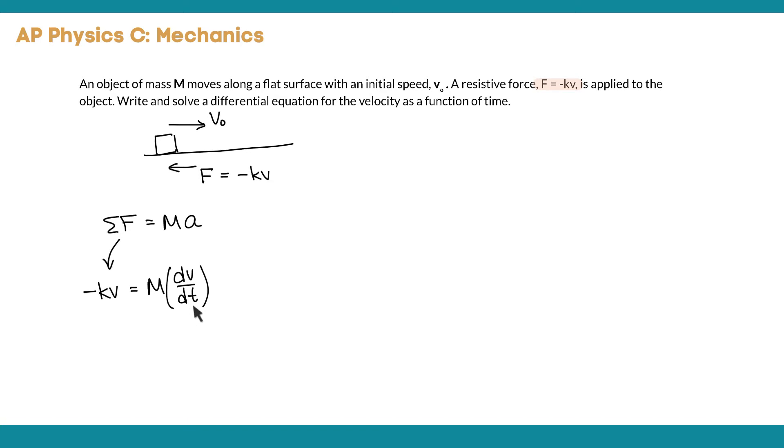This is something that we're going to solve all the way through for an expression for v, or v of t, incorporating the variables that are given to us in the problem. We're given this mass m, we have this expression for the force negative kv, and we have this initial velocity, so those are all things that need to be part of our expression at the end.